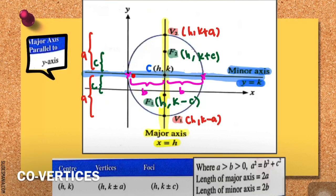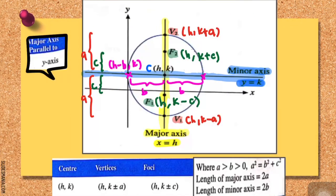For the left co-vertex, the x-coordinate goes back from h as much as distance b, so the x-coordinate is h minus b. The y-coordinate doesn't change, staying at k. For the right co-vertex, the x-coordinate moves forward as much as distance b, so the coordinate is h plus b, with the y-coordinate staying at k.